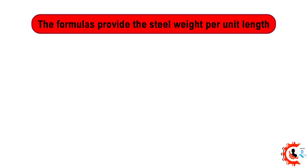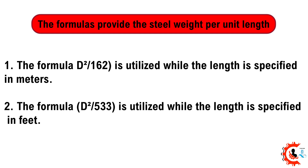The formulas provide the steel weight per unit length. Formula 1: diameter squared divided by 162, is utilized when the length is specified in meters. Formula 2: diameter squared divided by 533, is utilized when the steel bar length is specified in feet.